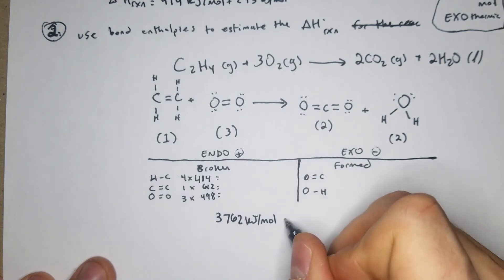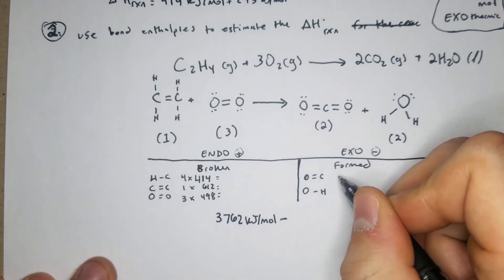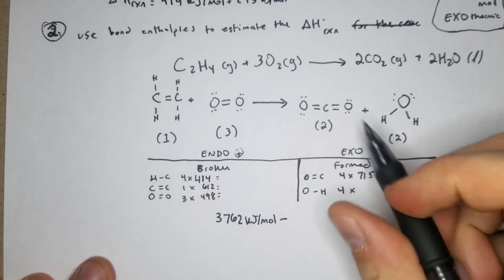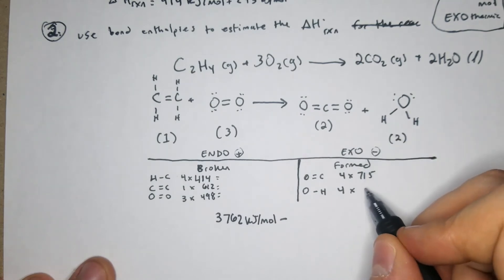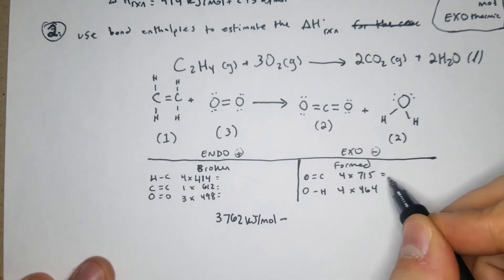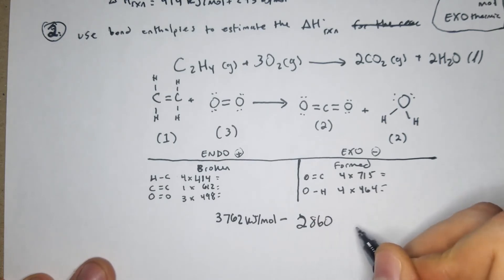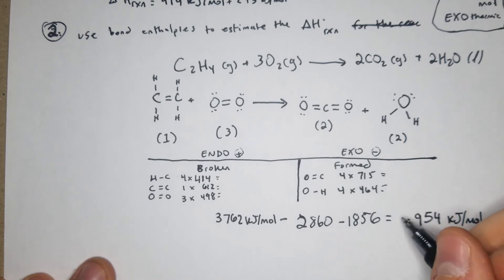Okay, so what I got for that was 3762 kJ per mole of bonds broken, so endothermic, minus what we have over here. We have 4 times 715, then we have another 4 times because 2 per molecule and there's two of them, 4 times 464. So we have 3762 minus 2860 minus 1856 equals negative 954 kJ per mole, and that is going to be exothermic.